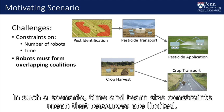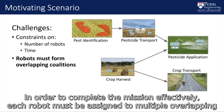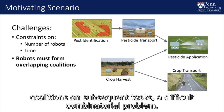In such a scenario, time and team size constraints mean that resources are limited. In order to complete the mission effectively, each robot must be assigned to multiple overlapping coalitions on subsequent tasks, a difficult combinatorial problem.